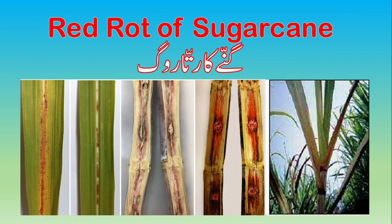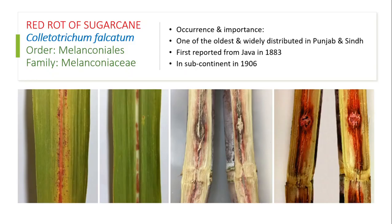Assalamu alaykum students. The next disease is red rot of sugarcane, which is the most important disease of sugarcane. The causal organism is Colletotrichum falcatum, widely distributed all around Punjab and Sindh wherever sugarcane grows. It was first reported in Java in 1883, and in the subcontinent it was reported in 1906.